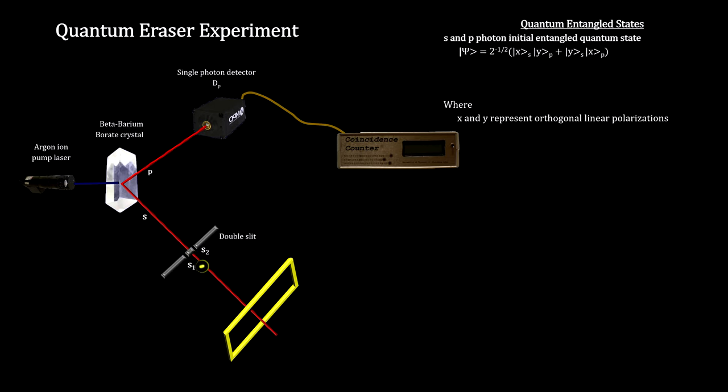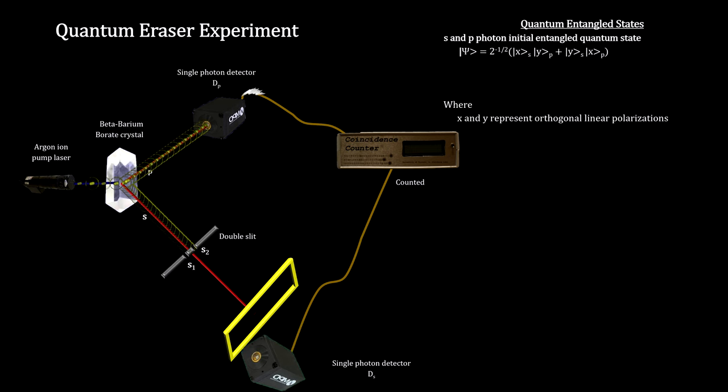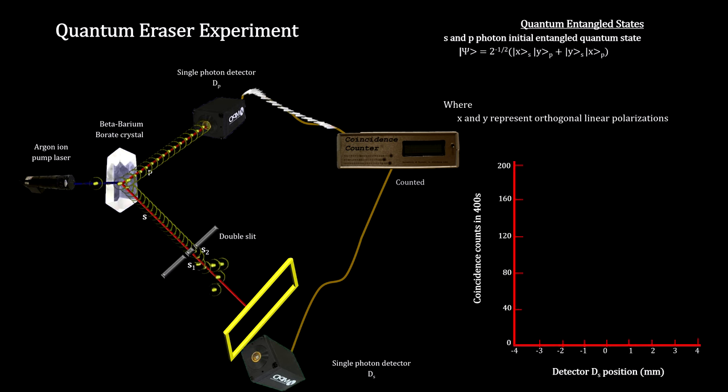The S photons go through a double-slit, but instead of hitting a fluorescent screen, some enter a movable single photon detector, D sub S. When it detects a photon, it too sends a signal to the coincidence counter. Once the coincidence counter receives this second signal, a count is recorded.